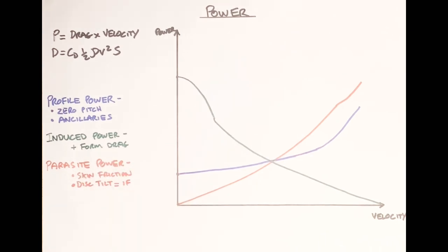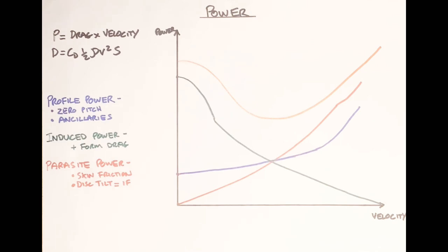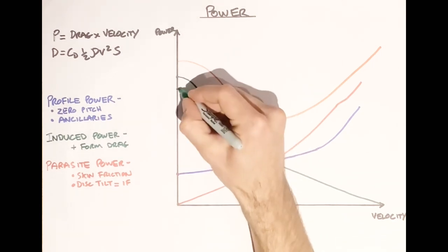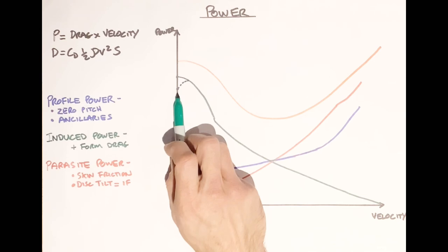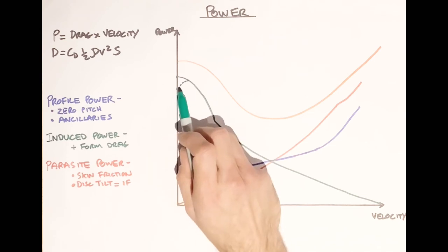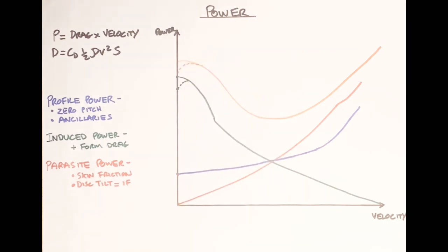Those are the three powers, and we can average them all out to give a single line. The last addition is IGE power: when in ground effect we get a reduction in power requirement for induced power. As we move away from that high pressure bubble reducing our power requirement, we start to need more power until we intercept the translational lift drop.